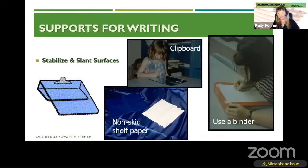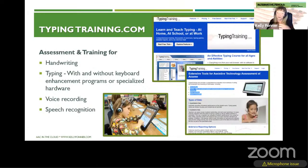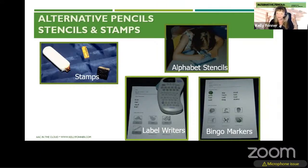Other things include stabilizing paper. There are supports like Handwriting Without Tears, Thera-Pro handwriting helpers, and the All Write curriculum. From Bridget Nicholson, there's a recent article in Closing the Gap about an assessment that looks at four areas of writing: handwriting, typing with and without a keyboard, voice recording as you're writing, and using speech recognition. The distinction between letter-by-letter writing versus getting content written out matters — you don't want cognitive energy for how to print competing with cognitive energy for what you're putting on the paper.